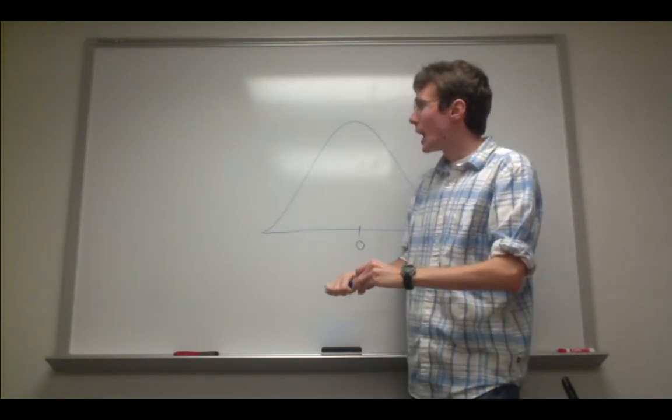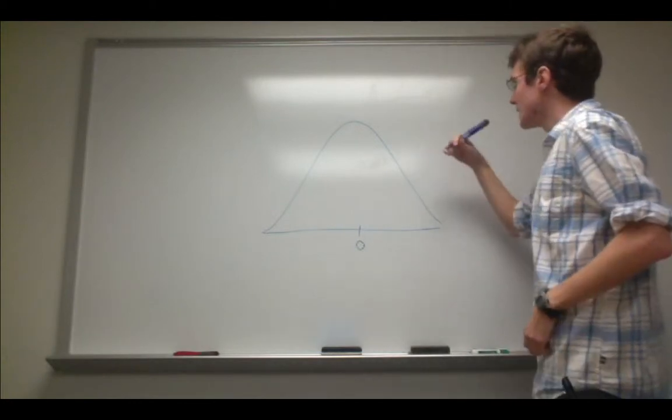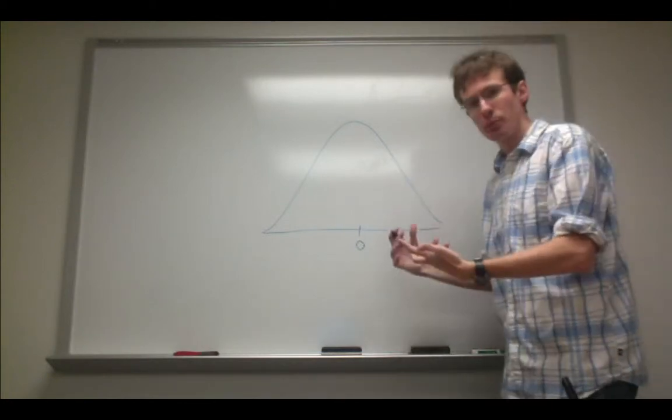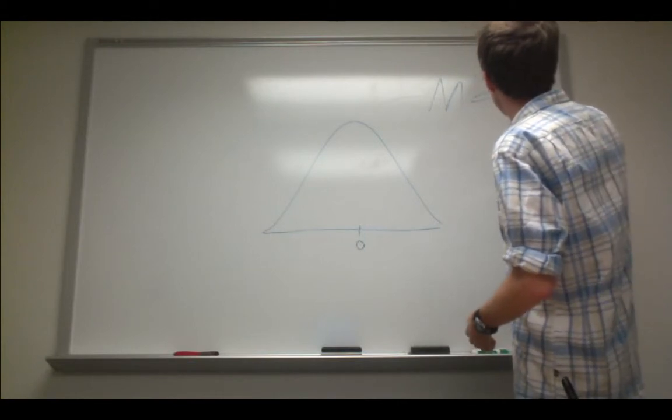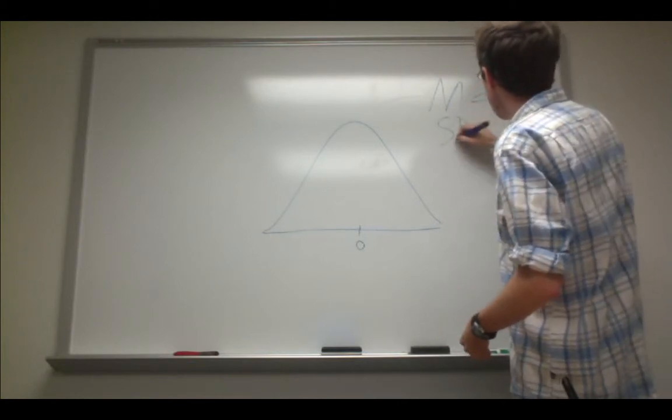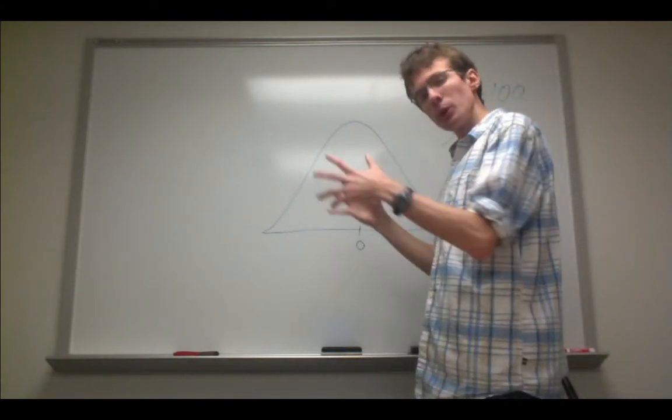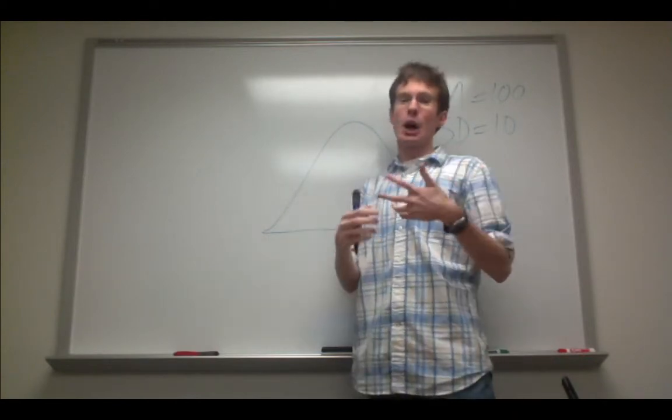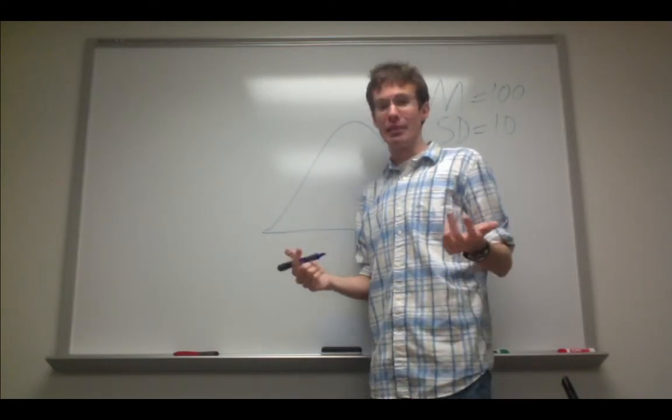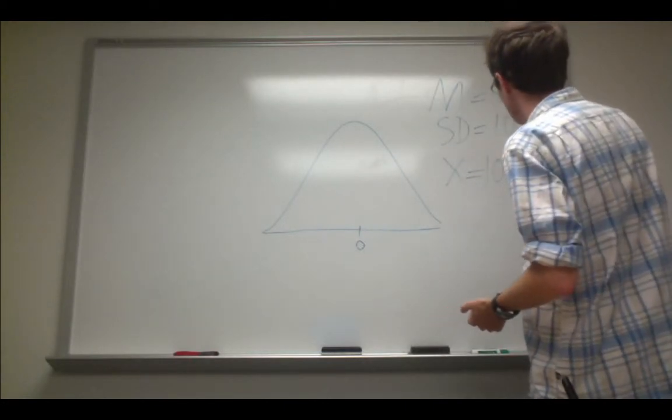So let's say that we're dealing with IQ scores. And let's say that we know that from an IQ score distribution, the mean is 100 and the standard deviation is 10. Further, let's assume that we draw somebody at random from the population and measure their IQ and find out that it is 105. In other words, their raw score or x is 105.